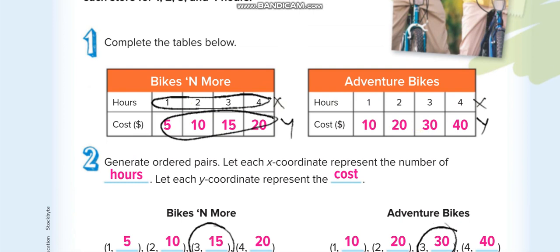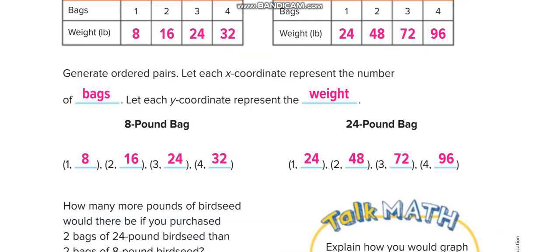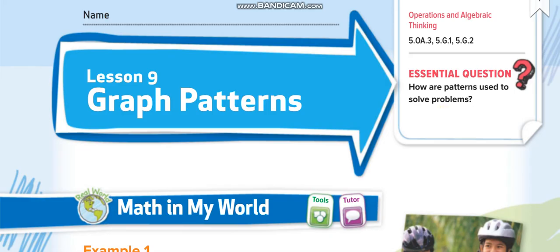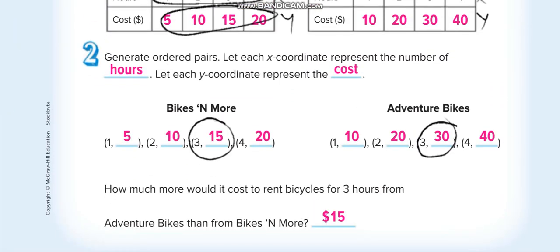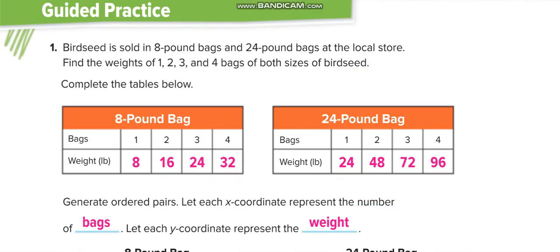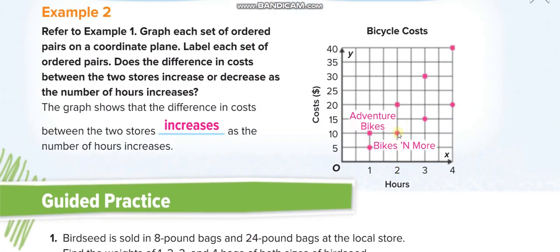Now we represent this data on the graph on the next page. For Bikes and More: X is one and Y is five — that's the first dot. Then two X and ten Y is the second dot, then three X and fifteen Y, and four X and twenty Y. Similarly, you plot the points for Adventure Bikes and join these dots.